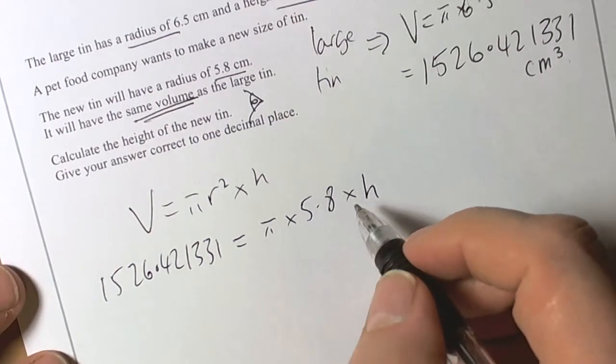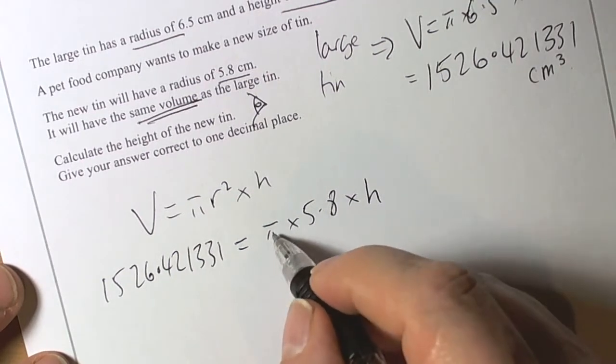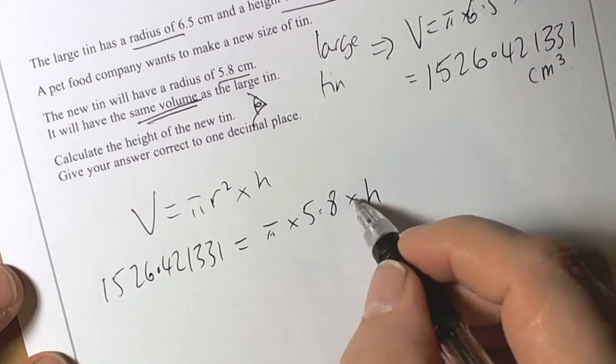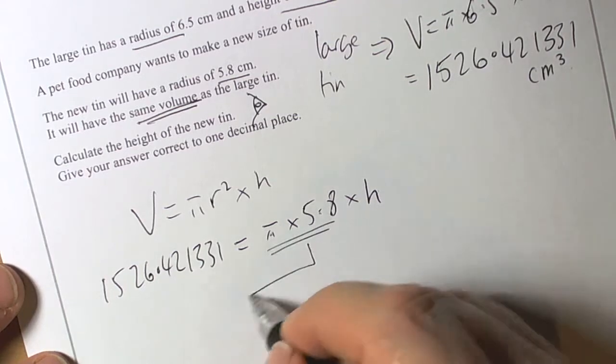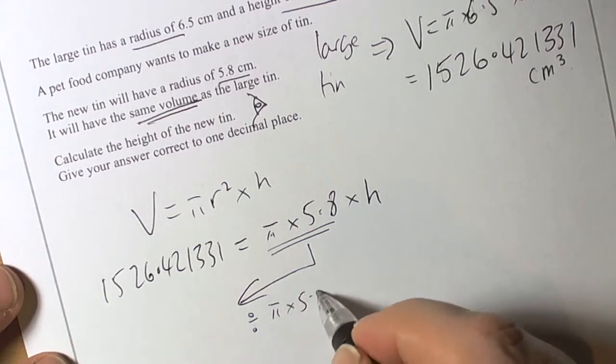So rearranging is the classic way of moving things by doing the opposite operations. So this is π times 5.8 times h. So these can all move across by dividing by π times 5.8.